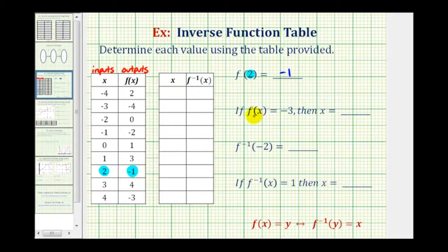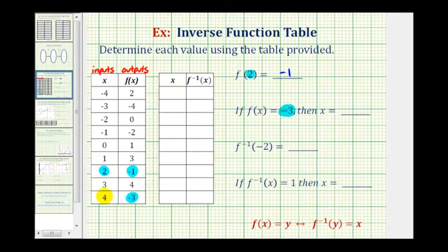Next, we're told that if f of x equals negative 3, determine the value of x. So negative 3 is the output of the function f. Going back to the table, we look for negative 3 in the output column. When the output is negative 3, the input or x value must be 4, so x equals 4.